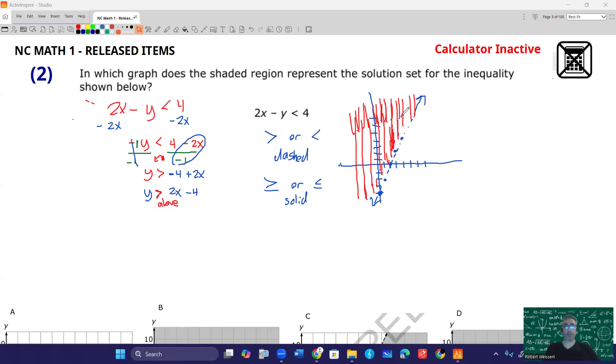So your picture will look something like this. Obviously, if I had a calculator I use, it'll be a little bit prettier, but this is the inactive portion. So I have to make do with what I can with my hand. So y is greater than 2x minus 4 would look like that picture.